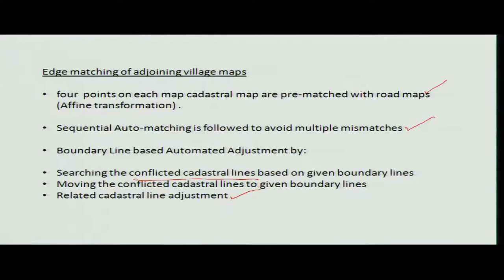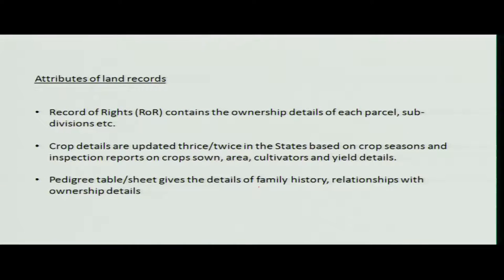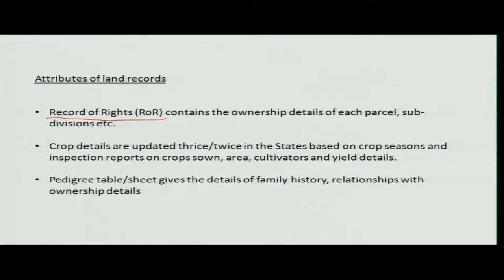The attribute data sets include the Record of Rights — who is owning a parcel, how much they own, and when they bought it. Also included are crop details, as mentioned in the Satbara-type forms, covering crops grown, area, cultivator name, and yield details.